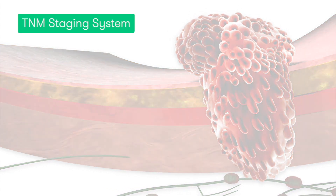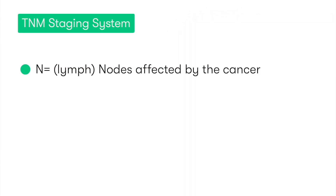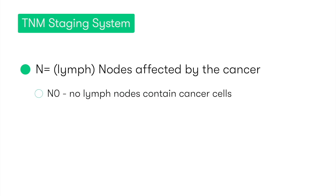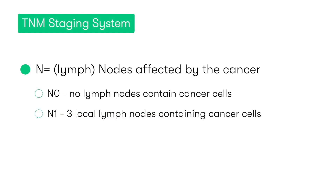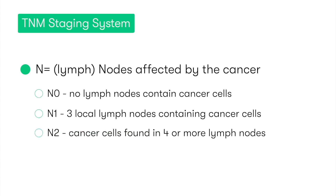Next in the TNM staging is N, which refers to lymph nodes and how many lymph nodes are affected by the cancer. With N0, it means that no lymph nodes contain any cancer cells. With N1, cancer cells are found in up to three nearby lymph nodes. Whereas in N2, cancer cells are identified in four or more lymph nodes localised to the cancer.